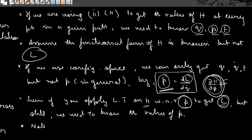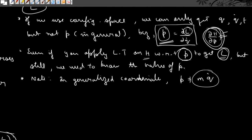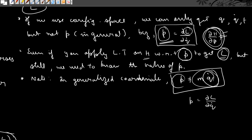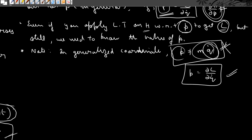Note that in generalized coordinates, P is not simply mq̇. In Cartesian systems this is how we define momentum, which makes it seem like knowing q̇ gives us P. But in the most general case — for a system under non-holonomic constraints or a non-monogenic system — you cannot assume that form. The correct definition is always P = ∂L/∂q̇. This simplification is only valid in Cartesian coordinates.